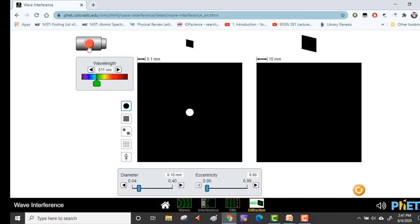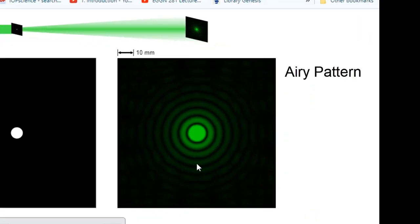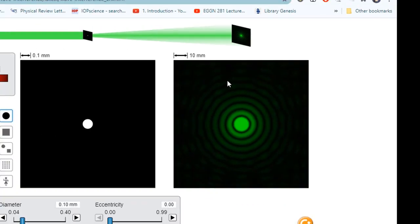The diameter of this aperture is 0.1 millimeters, which is pretty small but still not comparable to the wavelength. We switch on the laser. Now what we see on the right is what is known as an Airy pattern. It is essentially a far field image of the diffraction.